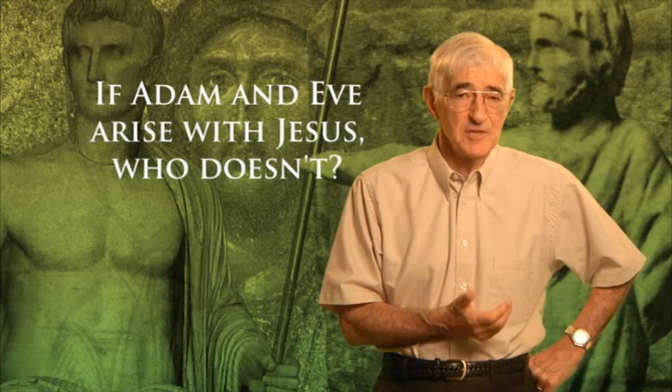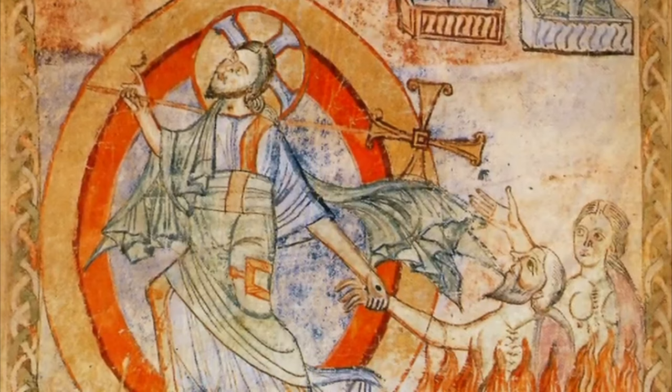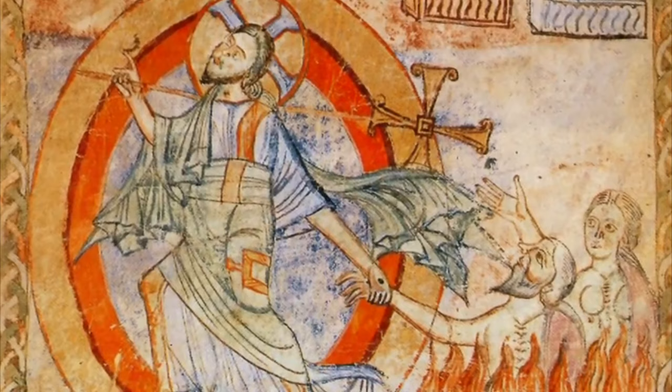Right beside Adam stands Eve. In the Western tradition we'd never have imagined that — that the first and most important person to rise with Jesus is Adam. Isn't he the one who caused all the trouble? And if Adam and Eve arise with Jesus, who doesn't? They are shown first. It's like that image on the Sistine Chapel when God reaches out to create Adam and their fingers almost touch but don't quite. But now, in the resurrection — the recreation — Jesus grasps Adam by the wrist. They're not just touching; he's pulling him, yanking him out of the grave.